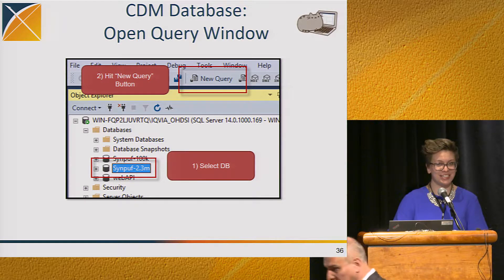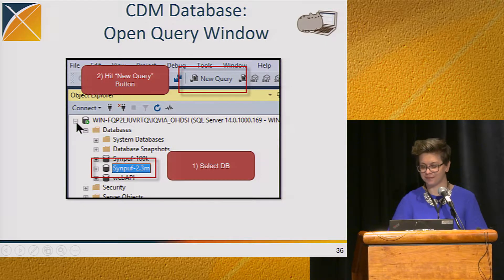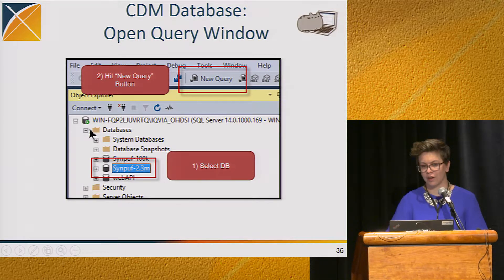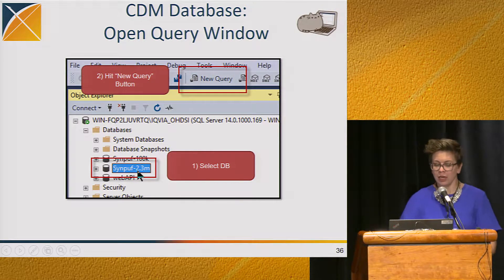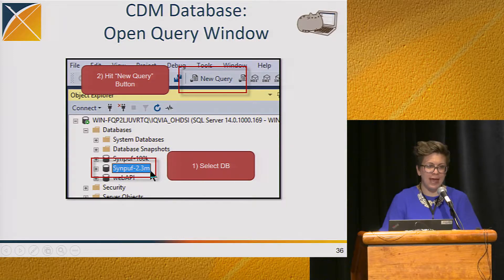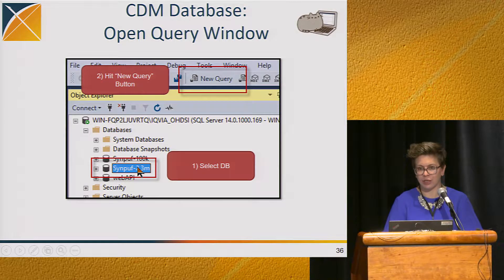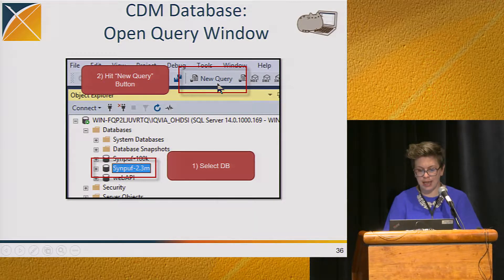Hopefully everybody sees that icon and just double-clicks on it in the VM. Once we open the Management Studio, there'll be a pop-up of a database to connect to. Just choose the defaults and connect to the database that it's already trying to connect to — you'll just hit connect.